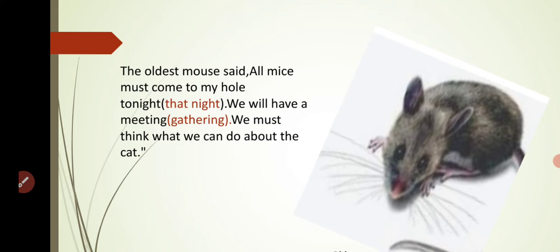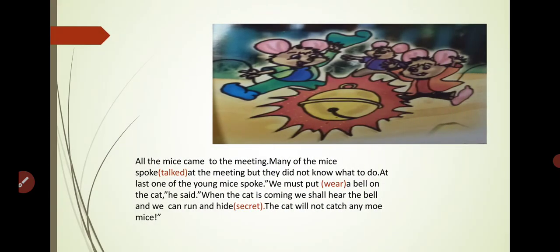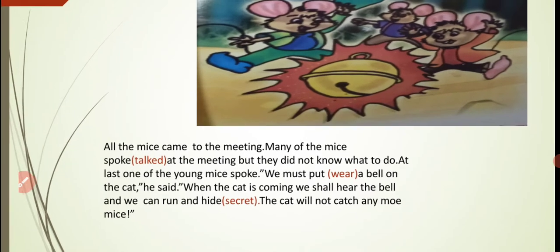The oldest mouse ordered that all mice must come to his hole tonight. They will have a meeting — a gathering — where they will discuss what they can do about the cat. They need to think of a solution because the cat was killing and eating the mice. They wanted to find a way to get rid of the cat. This is the picture of the oldest mouse.